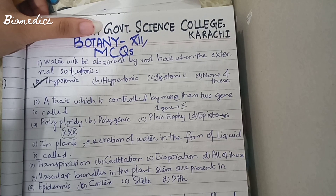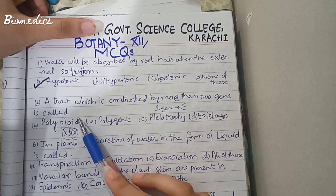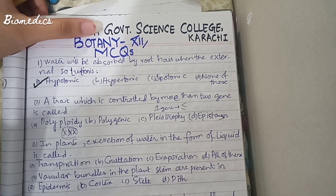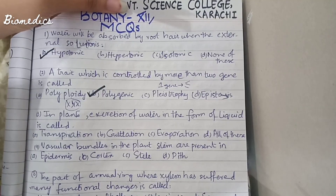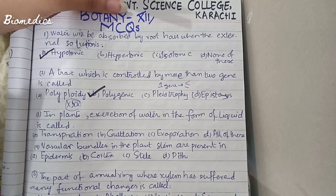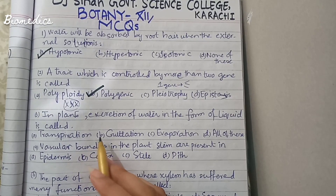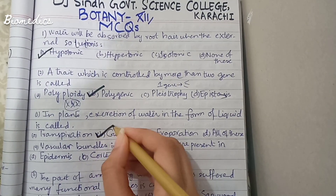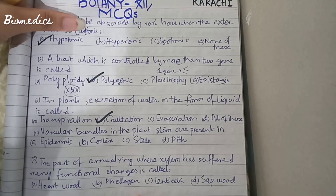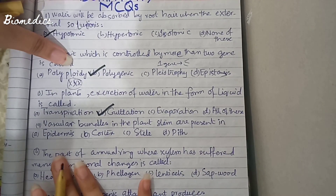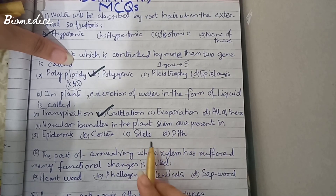The correct answer is polygenic inheritance. Polygenic inheritance involves more than two gene pairs controlling a single trait. In plants, the loss of water in liquid form is called guttation, while transpiration involves water lost as vapor. The loss of water in liquid form is guttation.